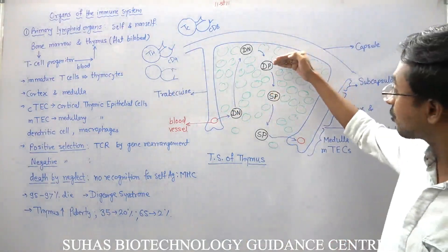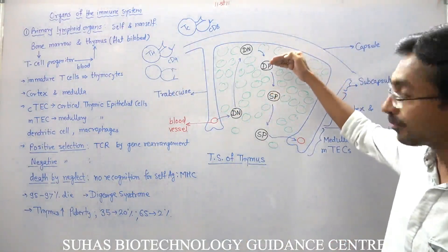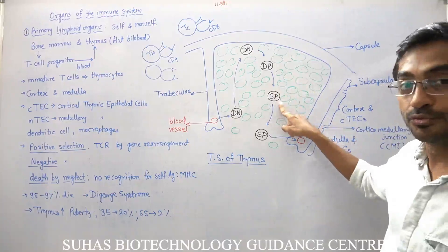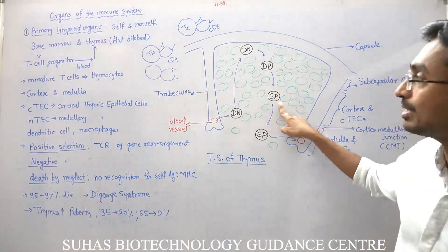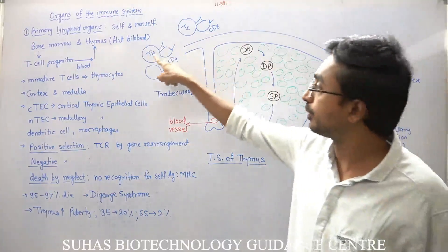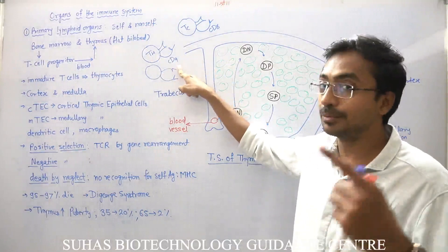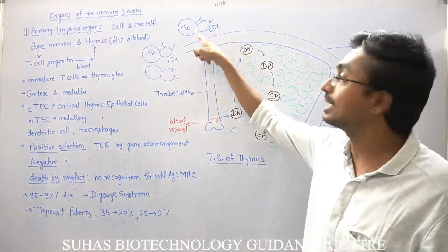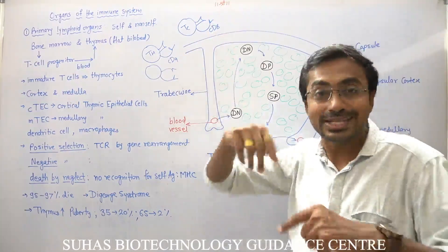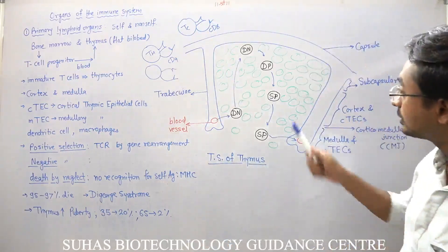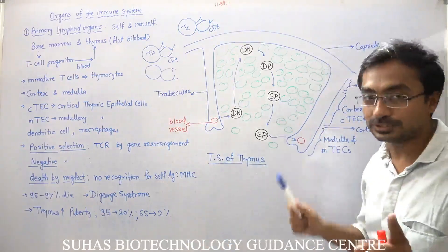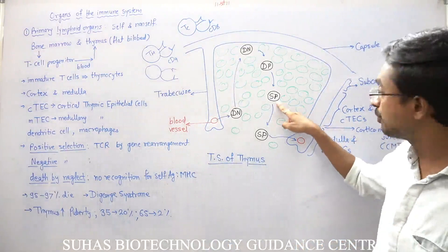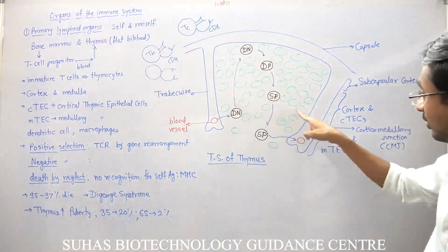As it travels from the cortex towards the medullary region, it will either remain CD4 positive — developing into a T-H lymphocyte — or CD8 positive — developing into T-C lymphocytes. This is called single positive.